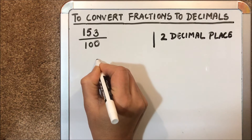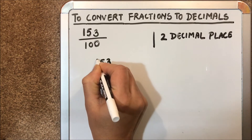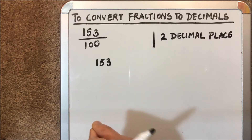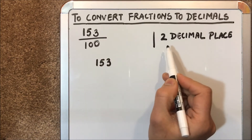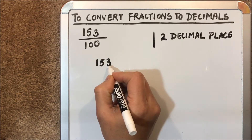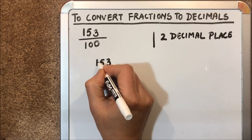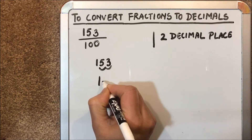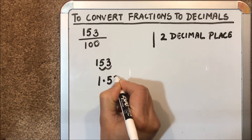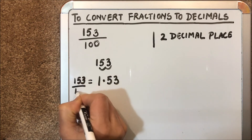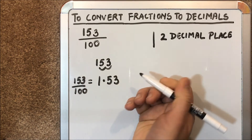The next step is to write only the numerator. Then we move the decimal point that many places to the left — in this case, two decimal places to the left. One and two. Then we put the decimal point. So 153 over 100 is equal to 1.53 in decimals.